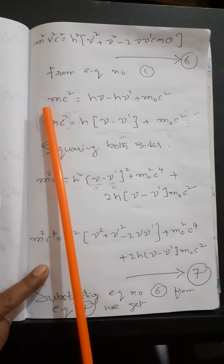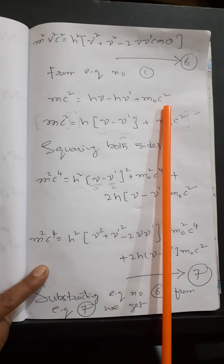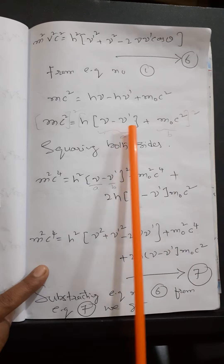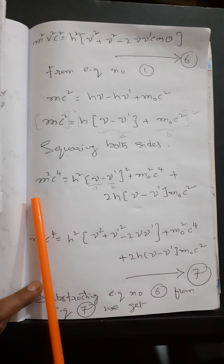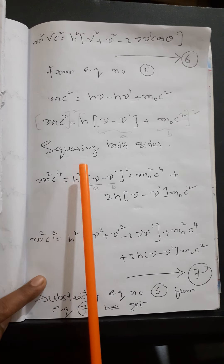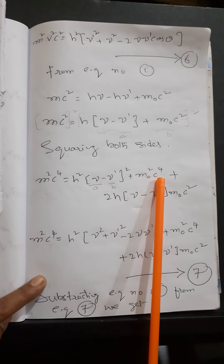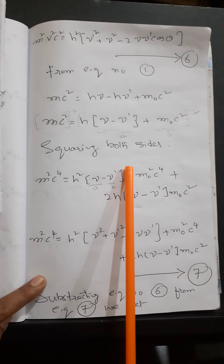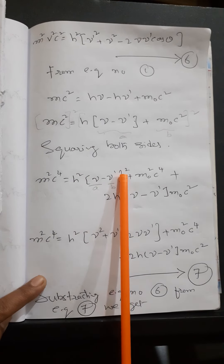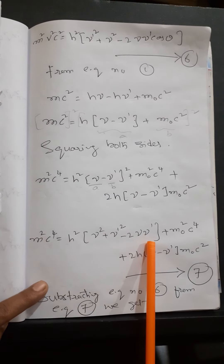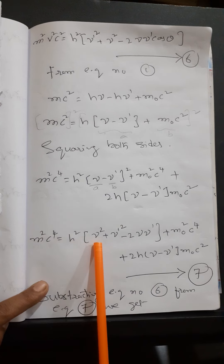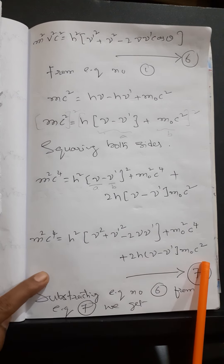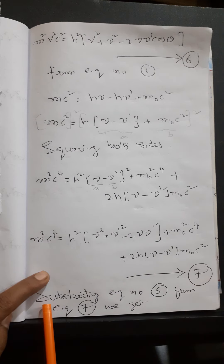From Equation 1, rearranging: mc² = h·nu − h·nu' + m₀c². Squaring both sides: m²c⁴ = h²(nu − nu')² + m₀²c⁴ + 2h(nu − nu')·m₀c². Expanding (nu − nu')² = nu² + nu'² − 2·nu·nu', we get: m²c⁴ = h²(nu² + nu'² − 2·nu·nu') + m₀²c⁴ + 2h(nu − nu')·m₀c². Let this be Equation 7.